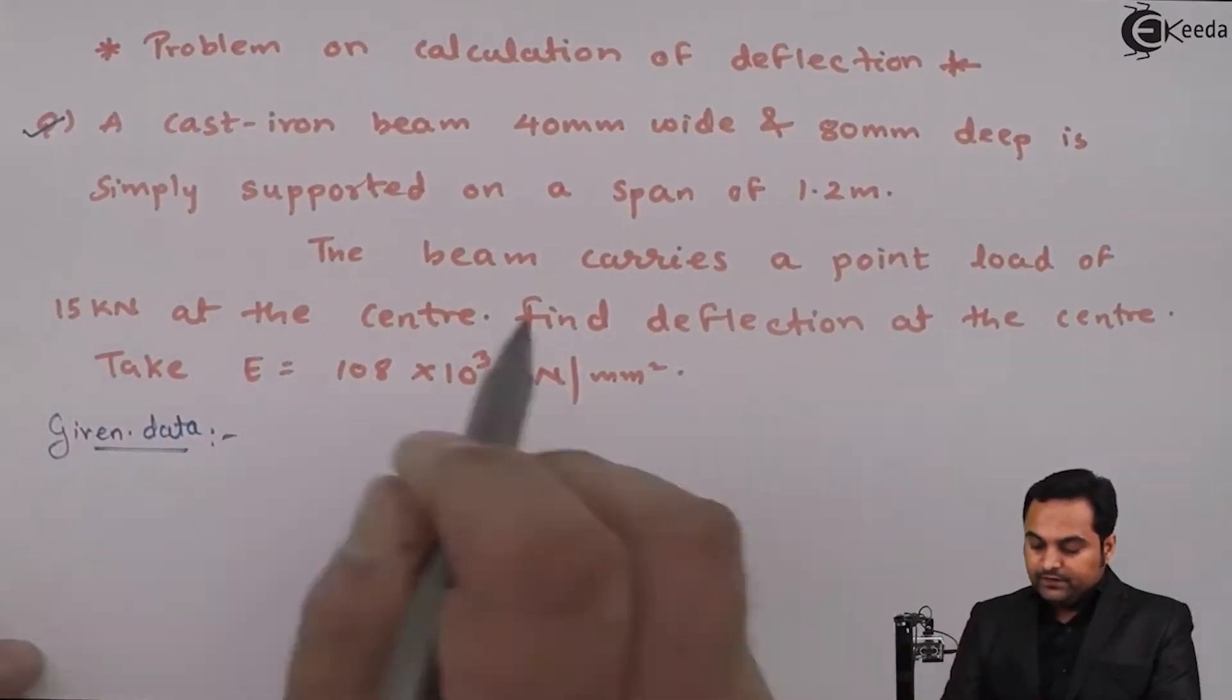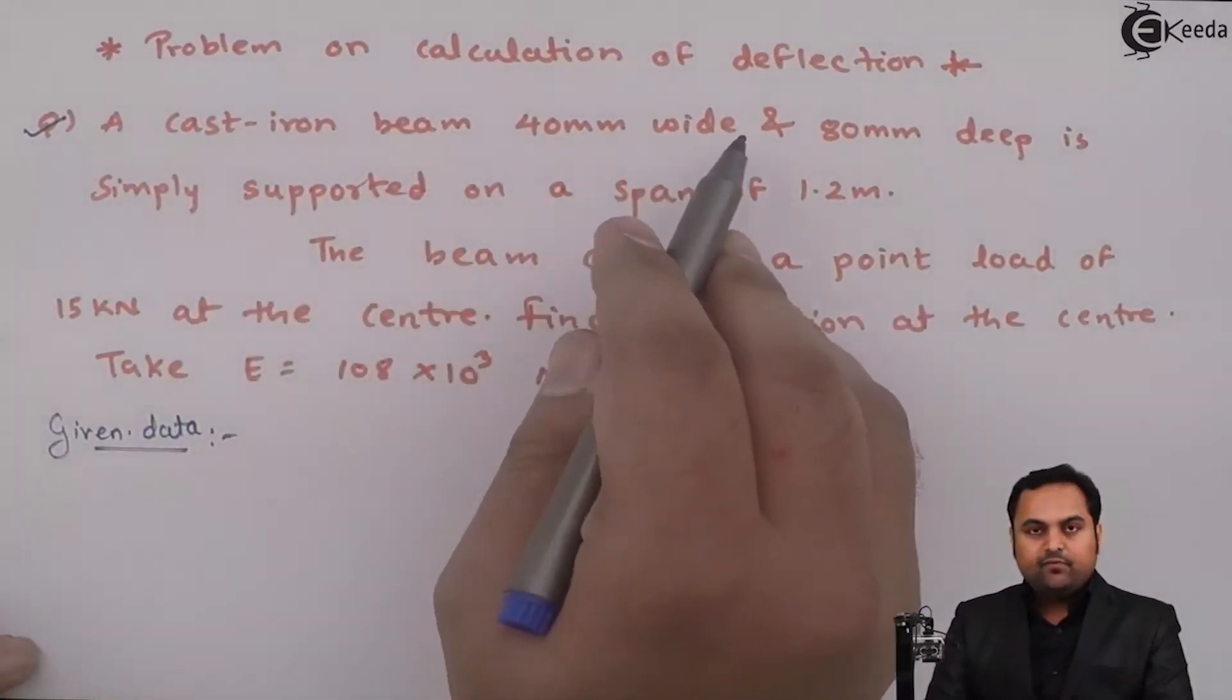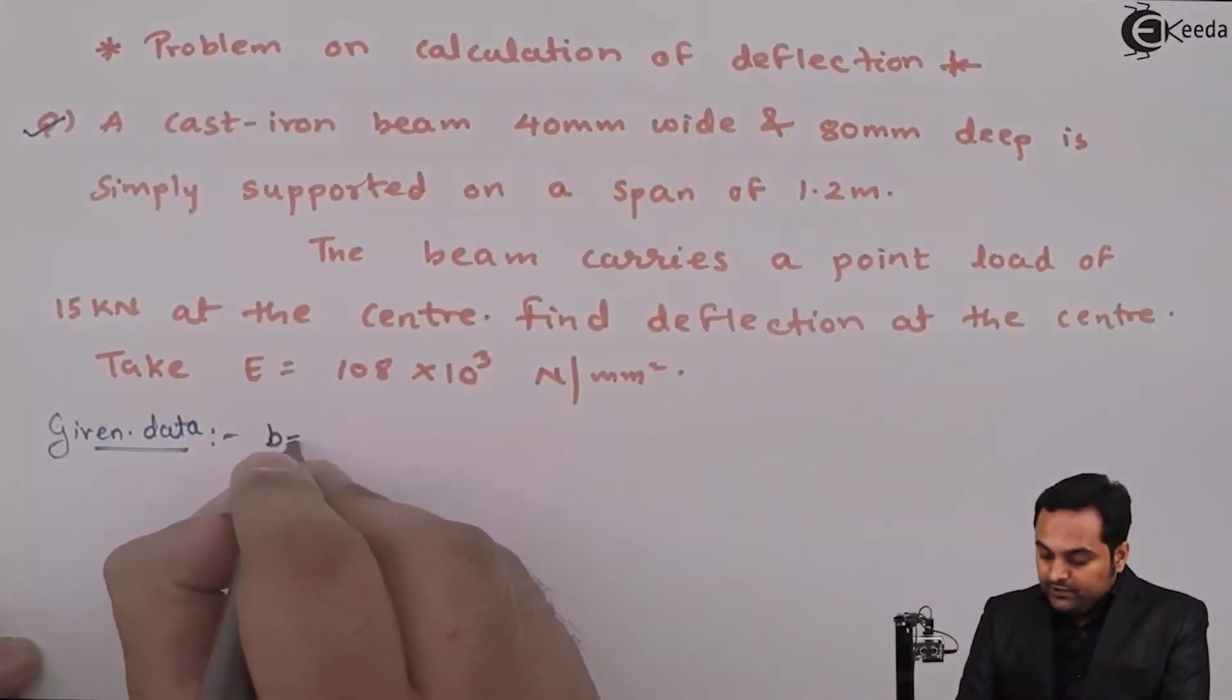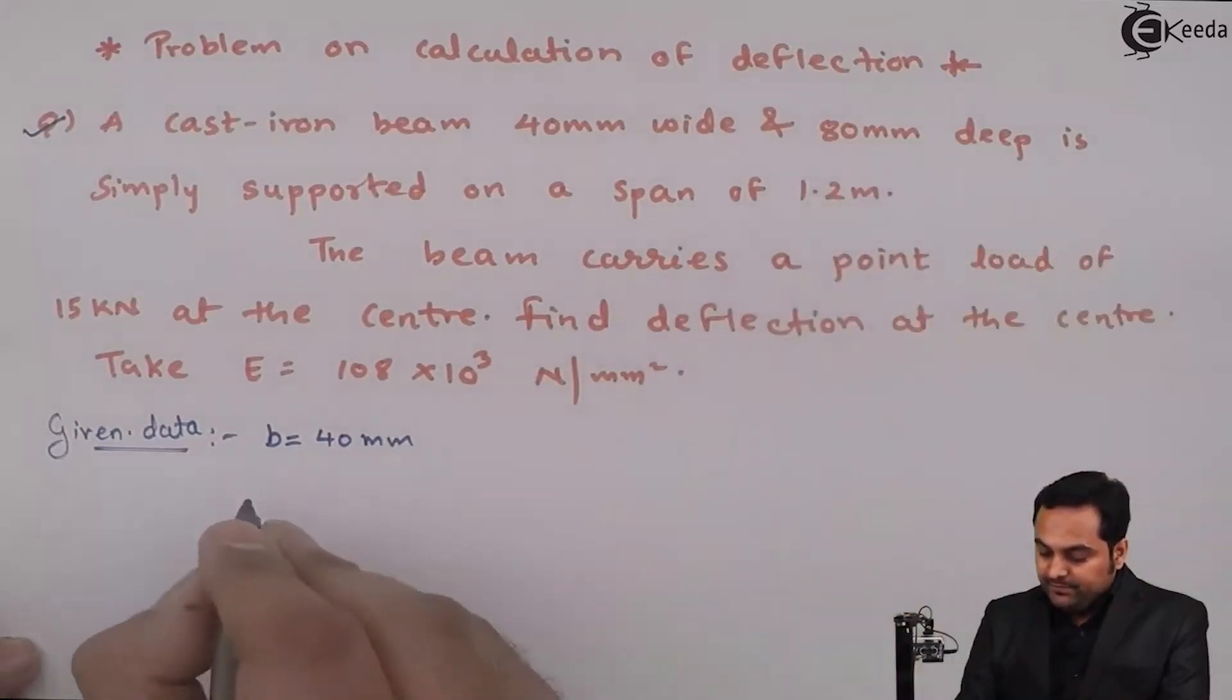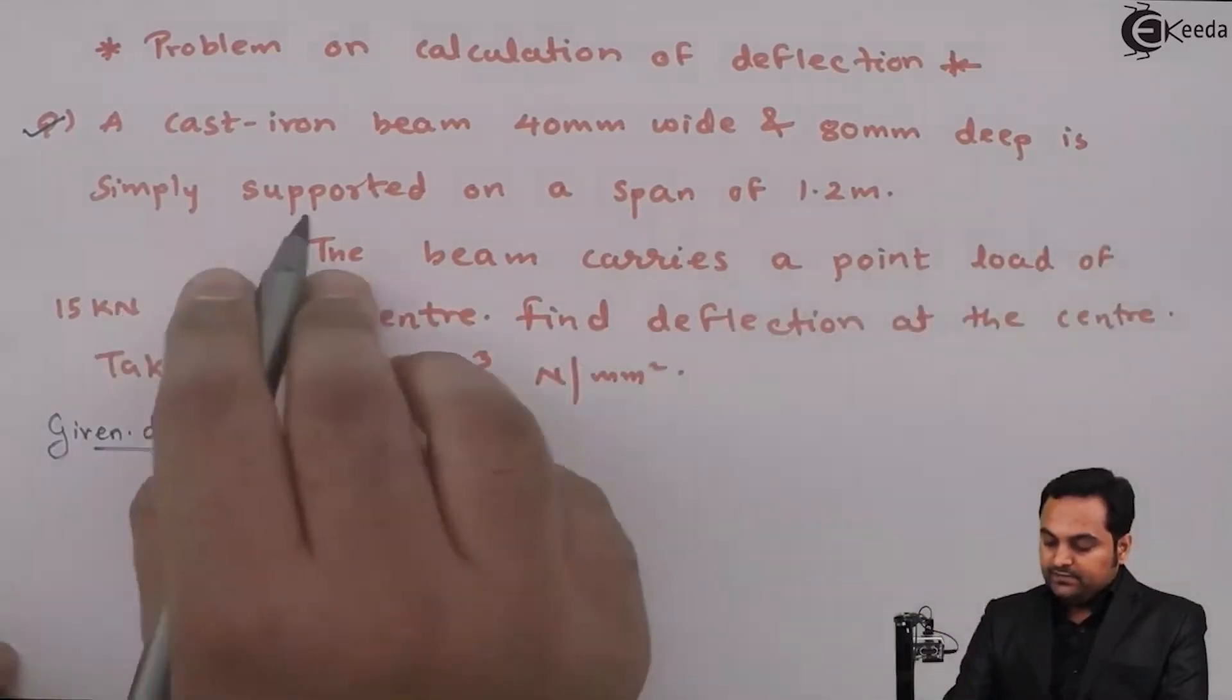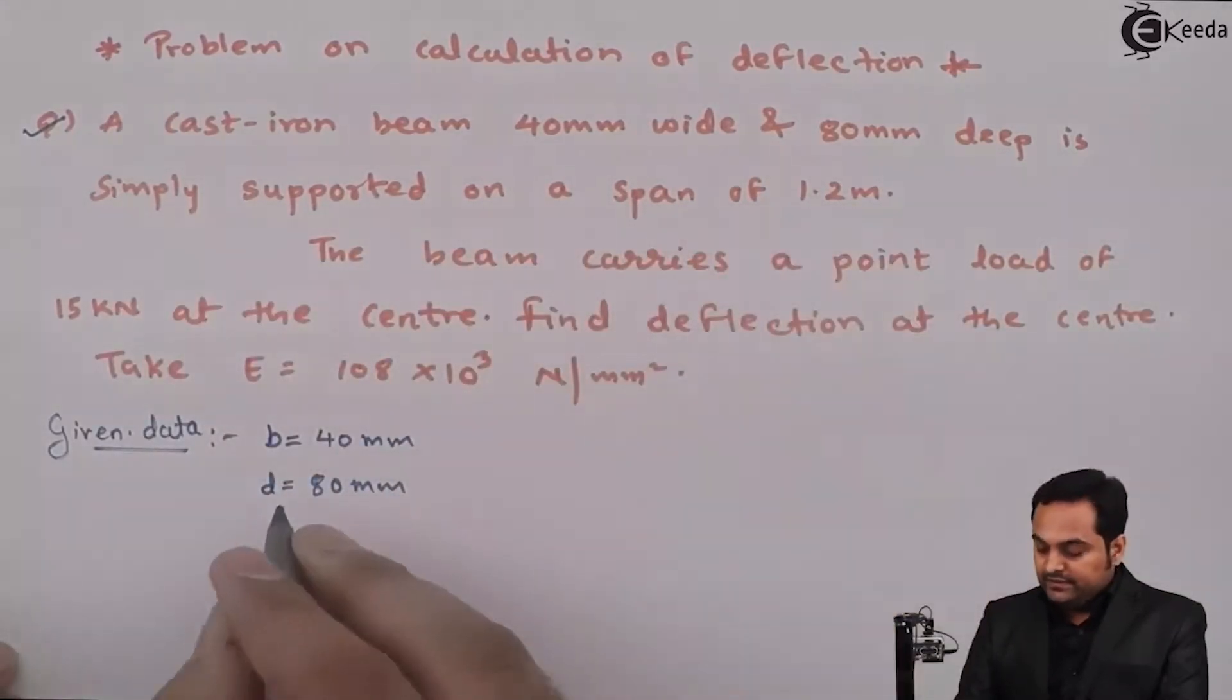It is given that a cast iron beam 40mm wide, so B width is 40mm, and 80mm deep, depth is 80, is simply supported on a span, that is the length of the beam which is 1.2 meter.